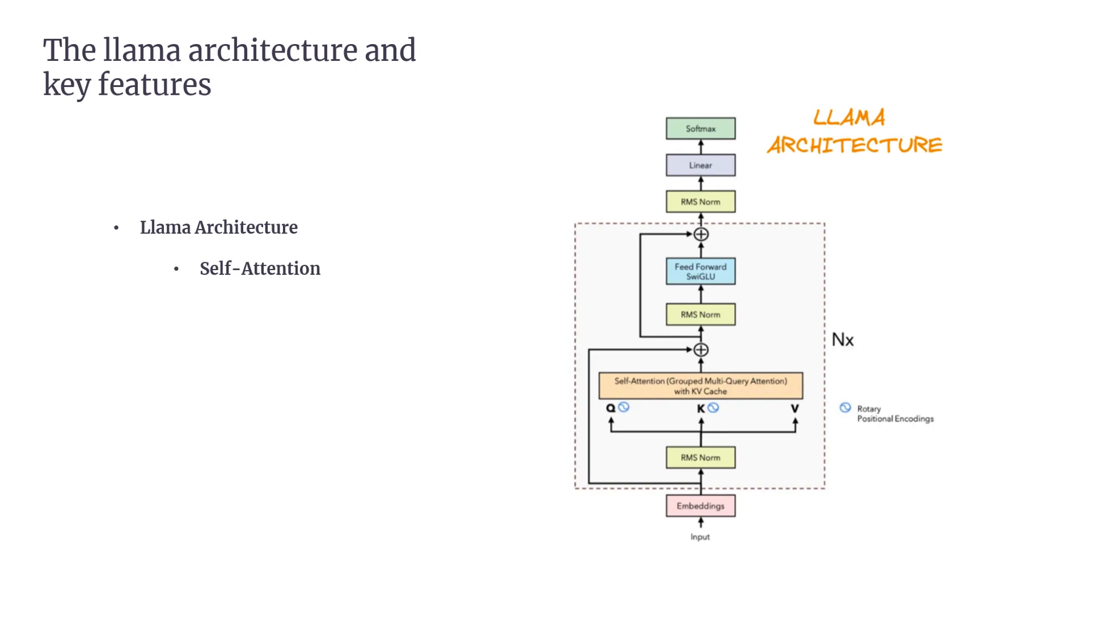Self-Attention. This mechanism enables each token in the sequence to pay attention to all other tokens. It's essential for understanding relationships between words, especially in long text sequences.